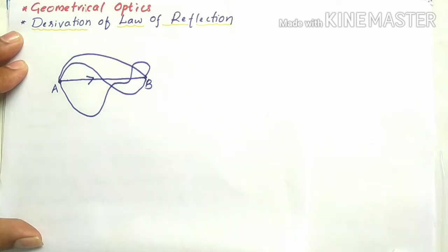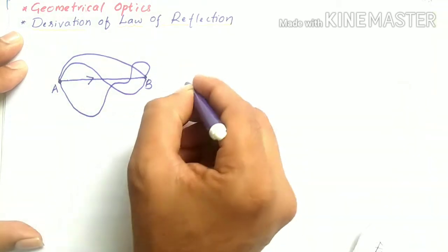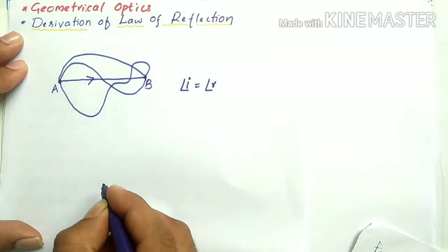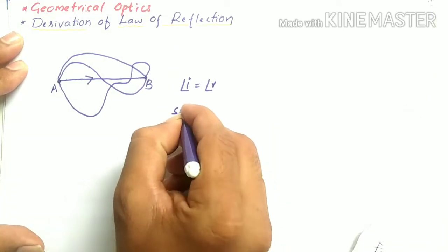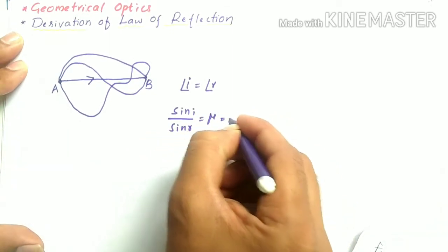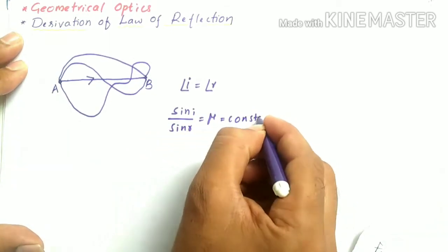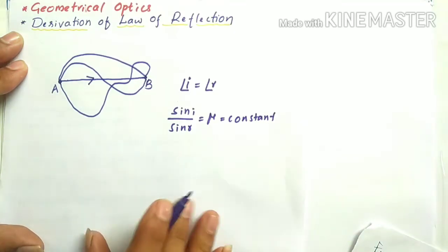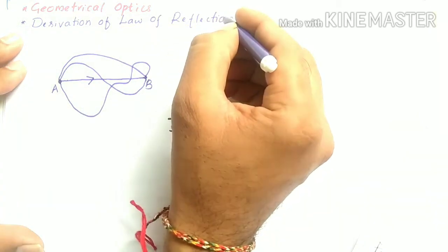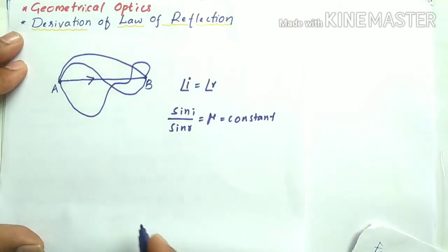From Fermat's Principle we can derive two laws. One is the law of reflection, that is angle of incidence equals angle of reflection, and another one is the law of refraction, that is sin i divided by sin r equals a constant, otherwise known as mu. Now we are going to derive the law of reflection using Fermat's Principle.